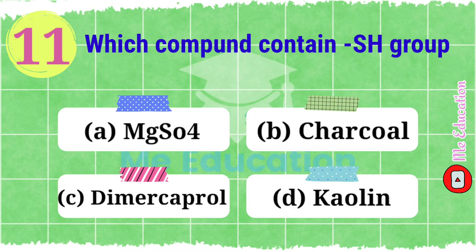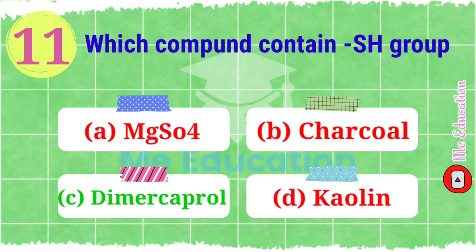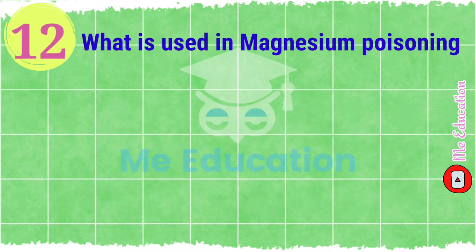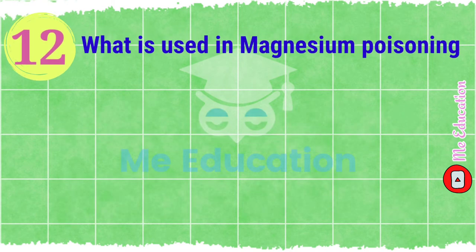Question number eleven: which compound contains an SH group? Options: magnesium sulfate, charcoal, dimercaprol, kaolin. Pause the video and try to answer. The right answer is option C, dimercaprol.